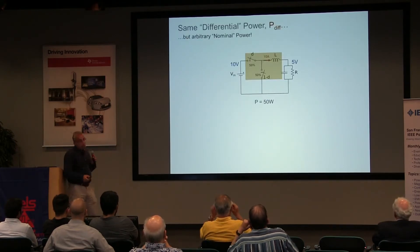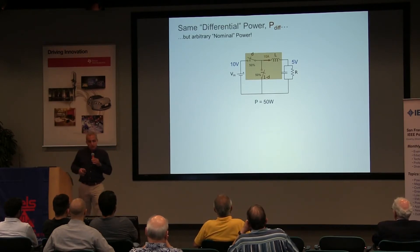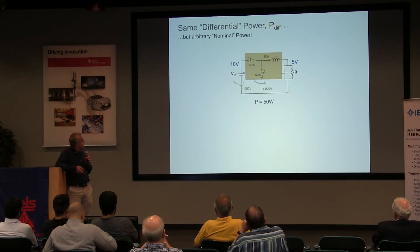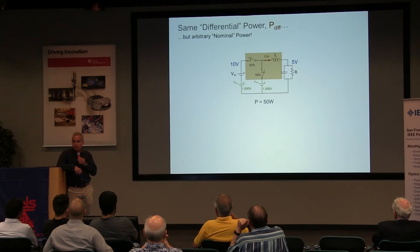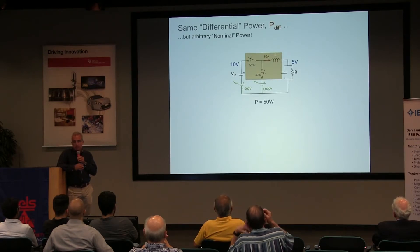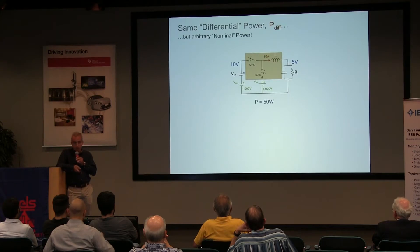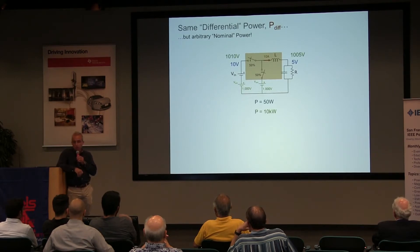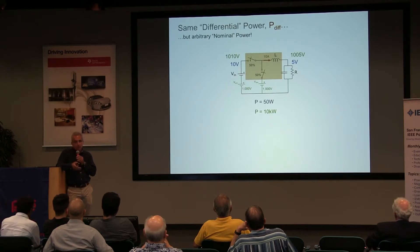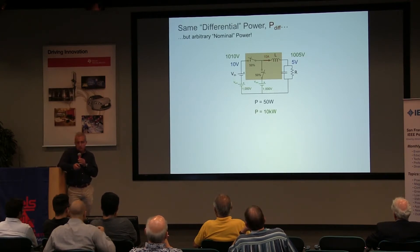Let me give you a couple of examples. Imagine a buck converter: 10V at the input, 50% duty cycle, 5V at the output. Now if you add an arbitrary voltage — say 1000V — in those two places, then for the same components, the same inductor and switches working under the same conditions, the output voltage would be 1005V. So the power of that converter is 10kW, and the same components working under the same conditions may be providing arbitrary amounts of power. What is identical in those two cases is the differential power — the power processed by the components.